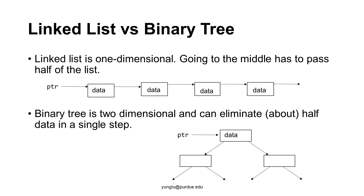Let's examine the linked list and the binary tree again using a different perspective. A linked list is one-dimensional. If we want to move to the middle of a linked list, we have to pass one node at a time, visiting half of the nodes. A binary tree is two-dimensional. It is possible to arrange data so that about half the data is on one side and the other half on the other side. As a result, it is possible to eliminate half of the data in a single step by deciding to go left or right.